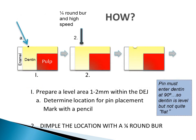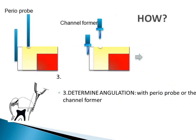Steps for pin placement: Step 1 — Determine the location for your pin. Step 2 — Use a quarter round bur to make a slight dimple. This dimple should be just deep enough to keep the channel former from slipping. Do not make the dimple the full diameter of the bur. Step 3 — Determine your angulation. Use the periodontal probe or the channel former. Hold the probe or channel former in the gingival sulcus against the external surface of the tooth, then move the instrument in toward the pin location and maintain the angulation. See the drawing. When parallel to the external surface and 1 mm from the DEJ, your pin channel will be located about halfway between the pulp and the external surface.